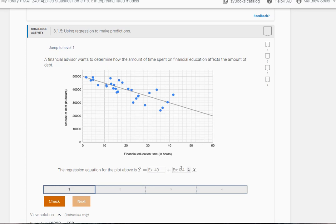The first thing it's asking for is the intercept, and you can actually see it. The intercept occurs when the x variable, which is financial education time, is equal to zero. If you scroll up here it looks like the intercept is 50,000.